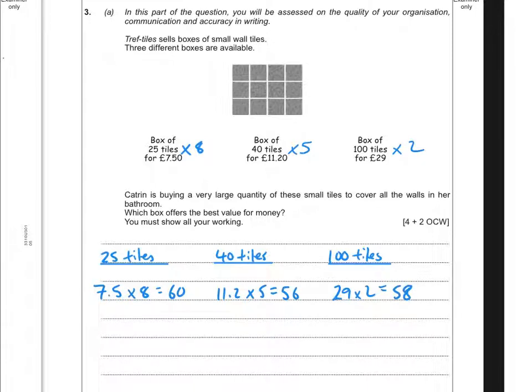We've done the calculations, we've shown all our workings. The really important step for OCW questions is to state our answer in a short conclusion, where we make sure we're spelling everything right and it's as accurate as we can make it. Looking at those three options, you've got £60, £56, or £58.